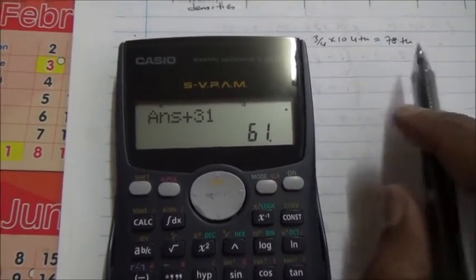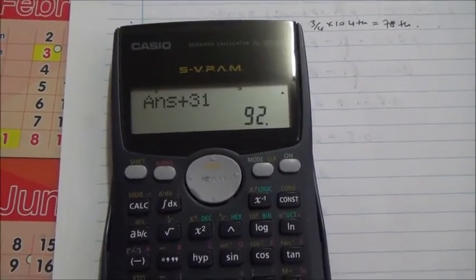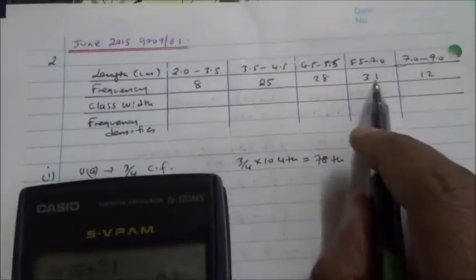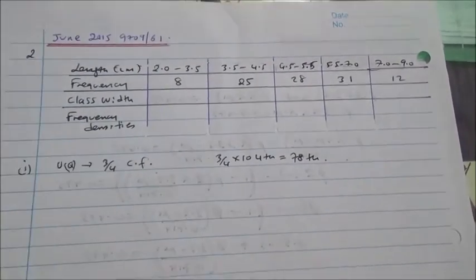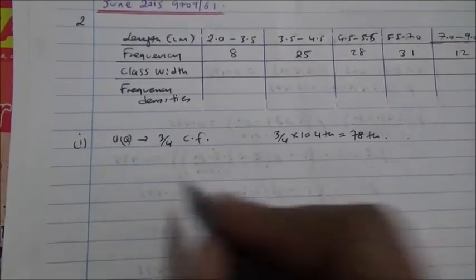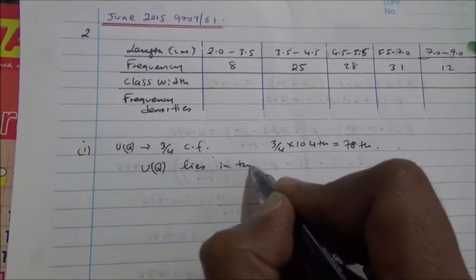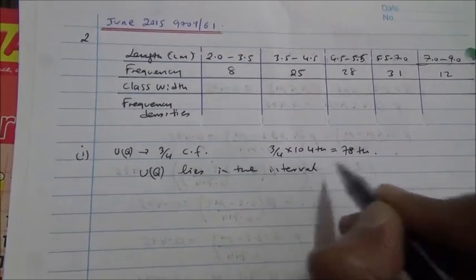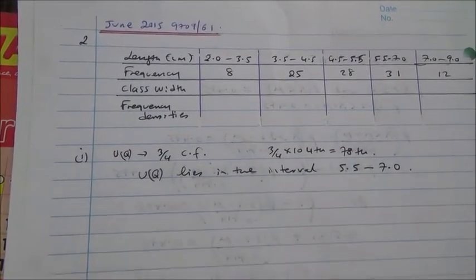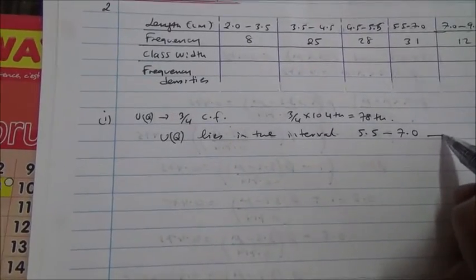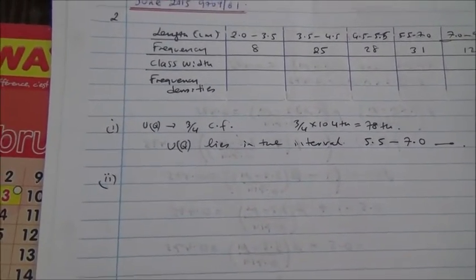If you add 31, then you're going to come up to 92. Yeah, 92 covers 78. So it stops here. So your upper quartile is between 5.5 and 7.0. So the class in which the upper quartile lies in the interval 5.5 to 7.0. And here you are for the first part of question number two. Now for the second part, we need to draw a histogram.